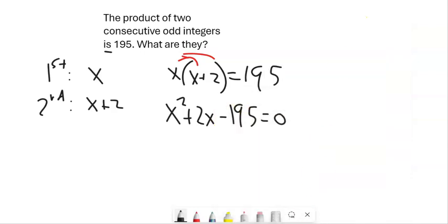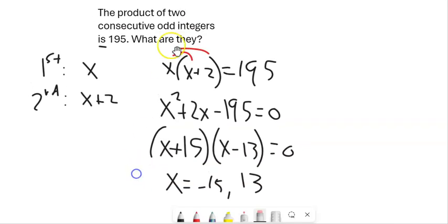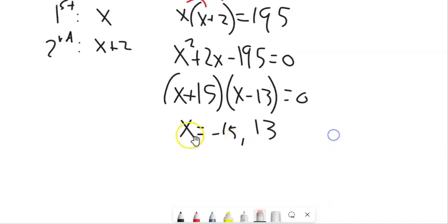So this will factor then into x plus, was it 15 and 13? I think it was, x minus 13 equals 0. And then now I can say, well, if that's true, x equals negative 15 or it equals positive 13. And now my original statement said they're odd integers. And odd integers can be negative and they can be positive. So my answer is not negative 5, negative 15 and 13.